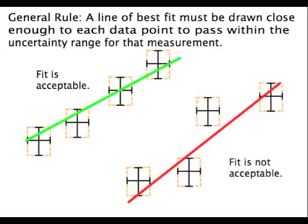You can see that the line of best fit passes through the boxes for each of the data points. Even though it doesn't come all that close to three of the data points, it's still within the boxes so it would be acceptable.